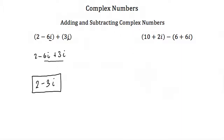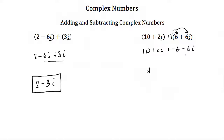Same thing for subtracting complex numbers — you can just subtract the real parts and subtract the imaginary parts, or again treat i like it's a variable. So if we were going to subtract 10 plus 2i and 6 plus 6i, I would convert this by saying this is plus negative 1 times the second number. Then I would distribute the negative 1 inside and we would end up with 10 plus 2i plus negative 6 minus 6i. Now I just add my like terms: 10 and negative 6 is positive 4, and 2i and minus 6i is minus 4i. So 10 plus 2i minus (6 plus 6i) equals 4 minus 4i.